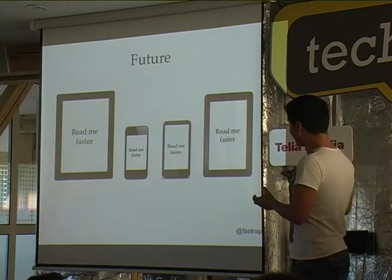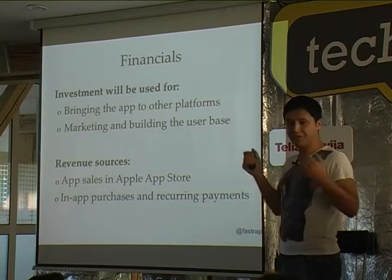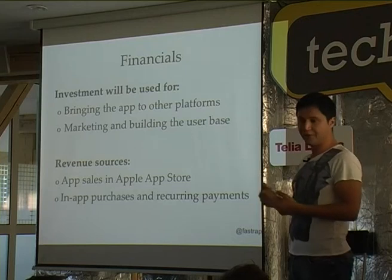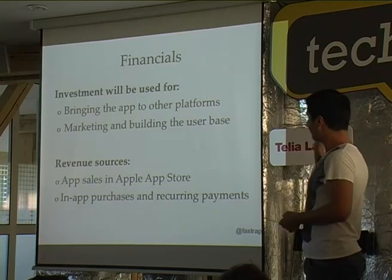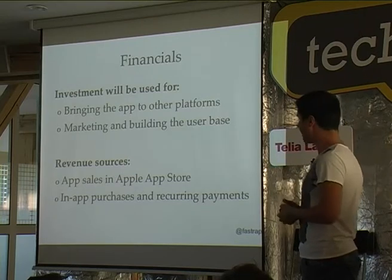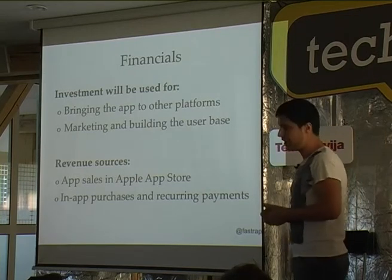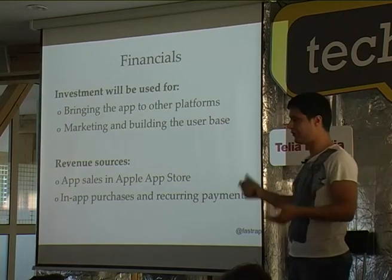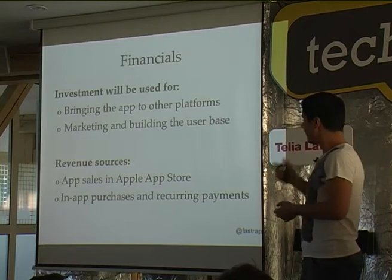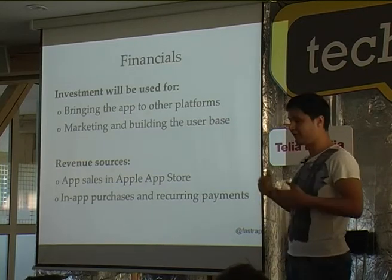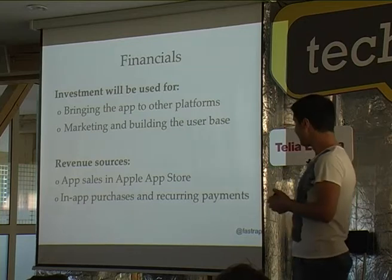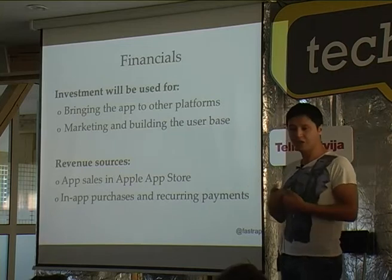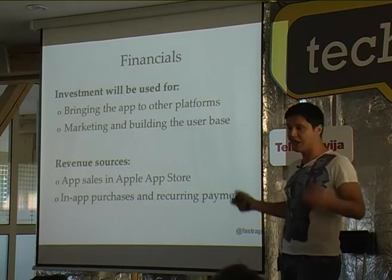We can do this with the help of investment, because this will let us speed up development. We really want to be first. We'll invest in marketing and get it to all the media we can. We'll build a Facebook application for marketing purposes, and of course we'll need to travel to do direct sales. Revenue sources: first, the app from the App Store; and second, we're going to add in-app purchases and recurring payment from loyal customers as we build the community around speed reading.